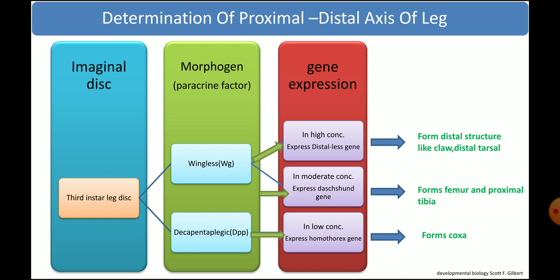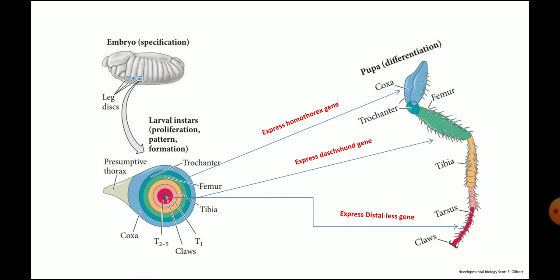Now let's see the role of different genes in the third instar larva imaginal disc cells and how they affect structural formation. The center of the imaginal disc secretes two paracrine factors — Wingless and Decapentaplegic — which act as morphogens. When present in high concentration, they express the Distal-less gene and induce distal structure formation like the claws. When moderate concentrations are present, they express the Dachshund gene, which forms the femur and proximal tibia. When morphogens are in low concentration, they express Homothorax and form the most proximal structure, that is the coxa.